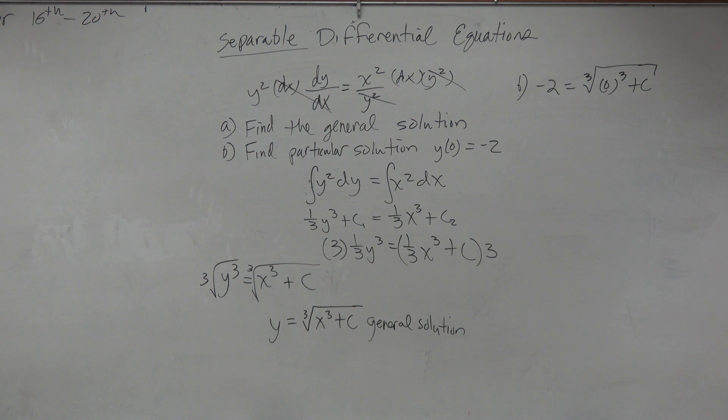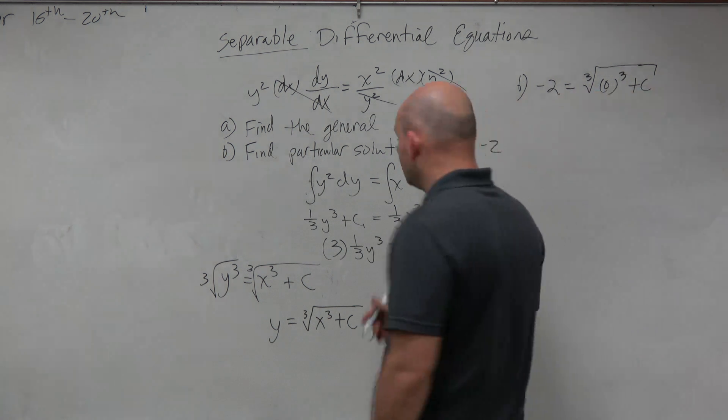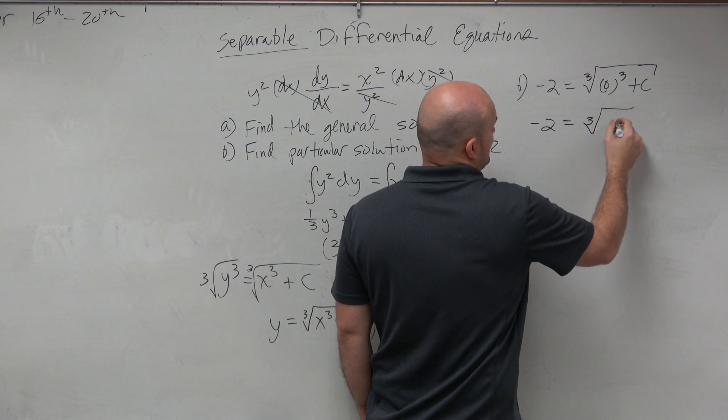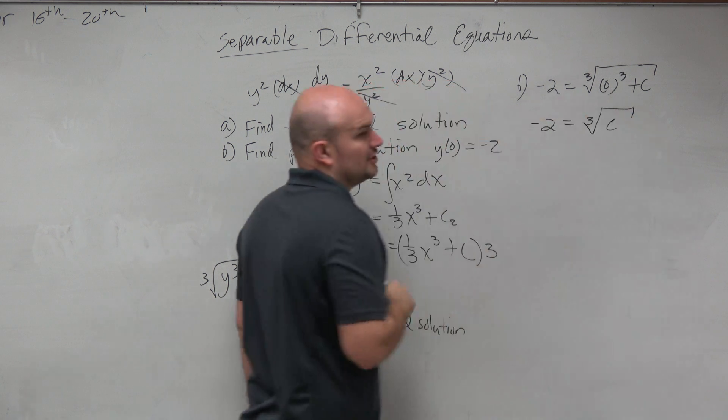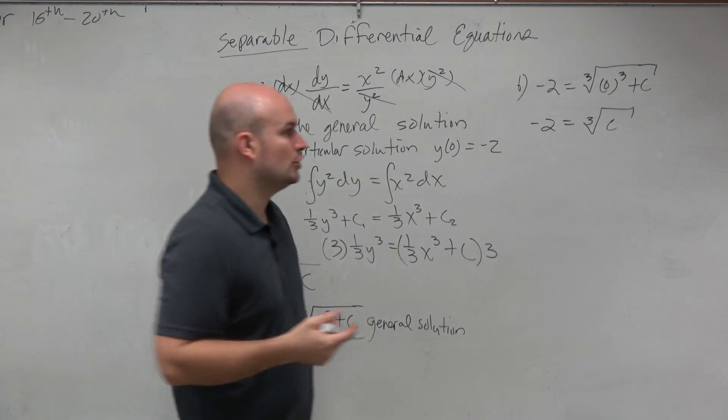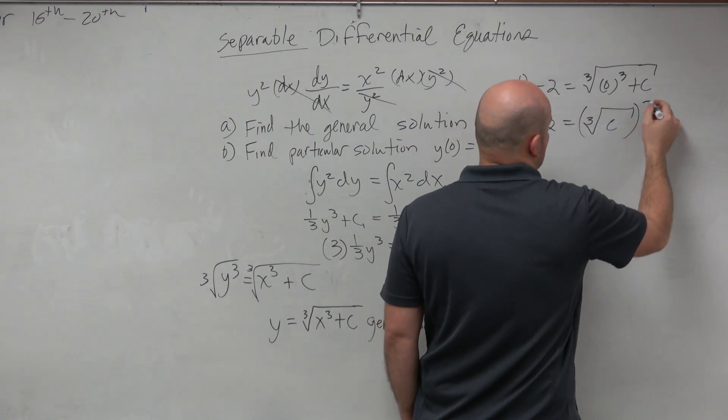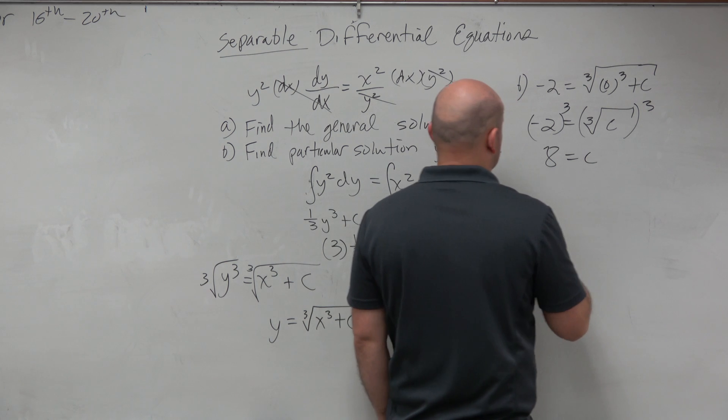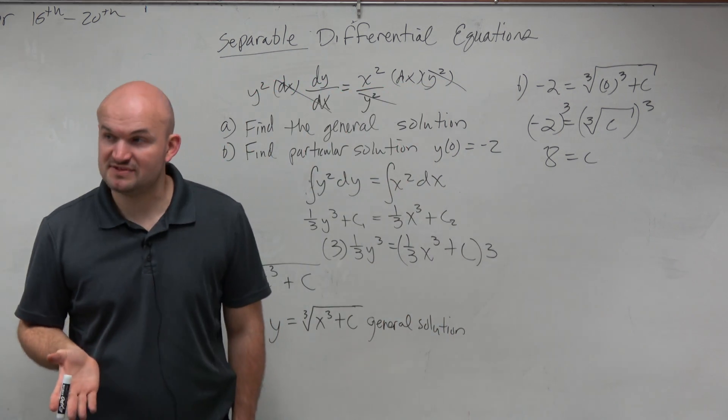So negative 2 equals the cube root of 0 cubed plus c. It's not looking too bad. Negative 2 equals the cube root of c. Now, to undo the cube root, I just need to cube. So that's my value of c.